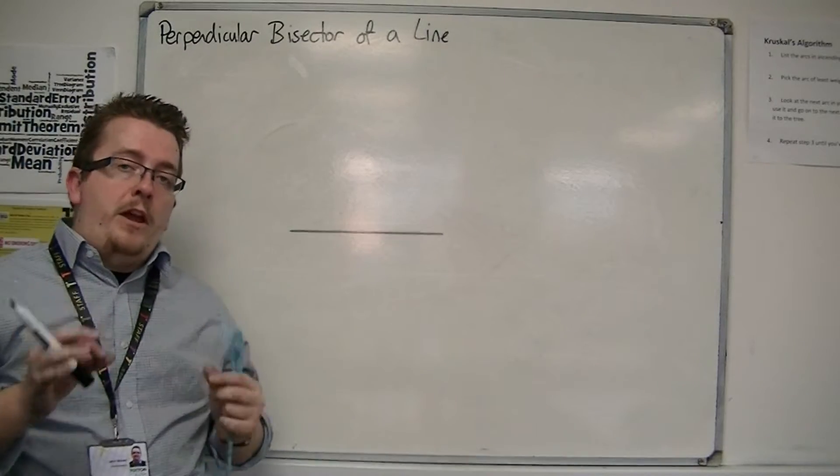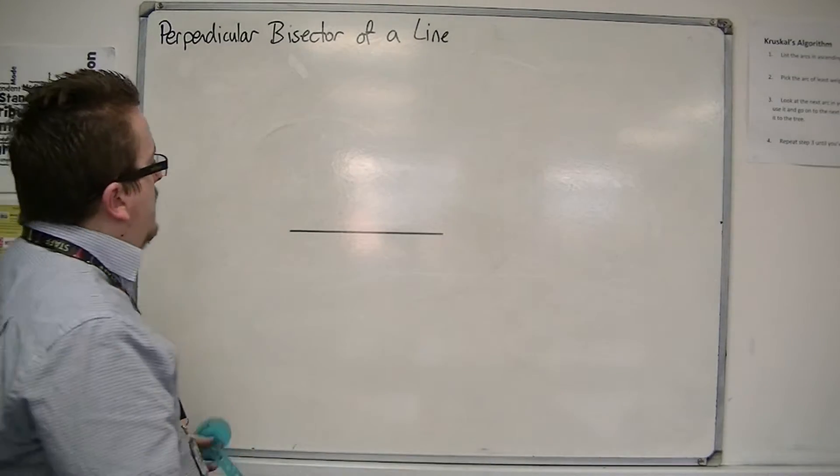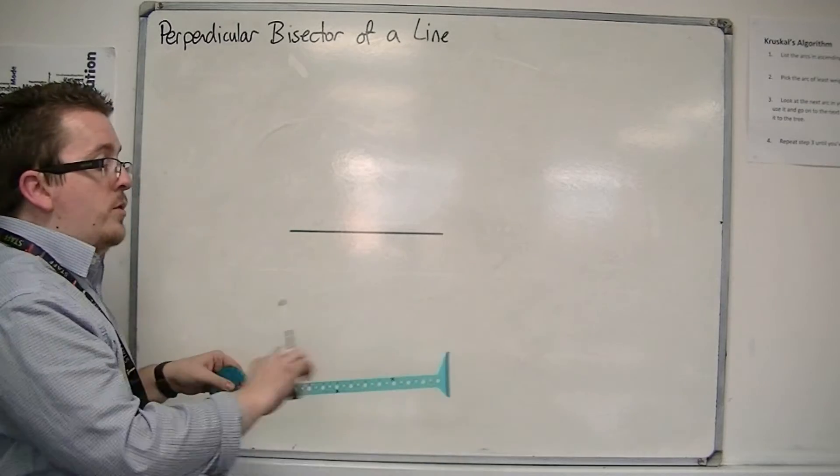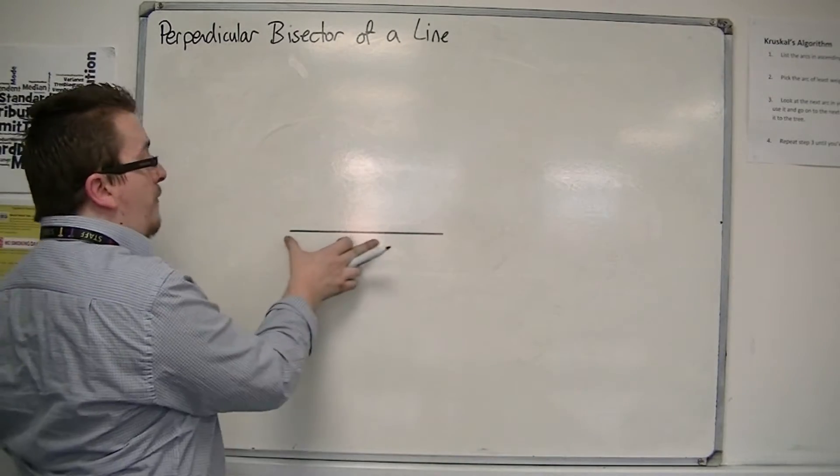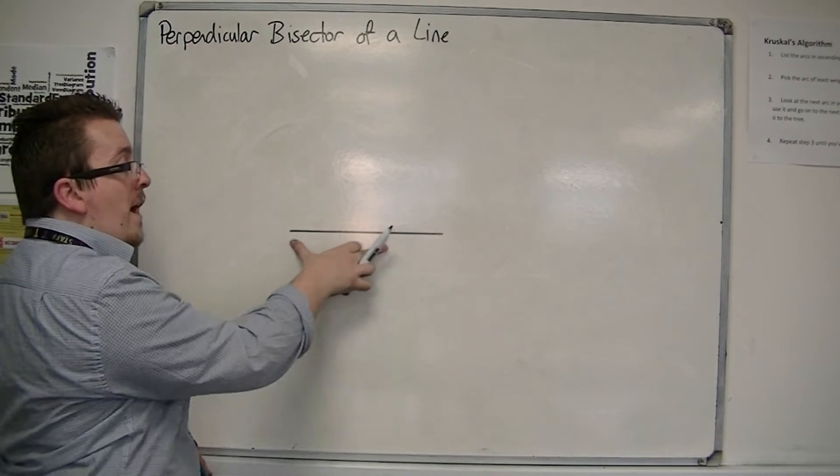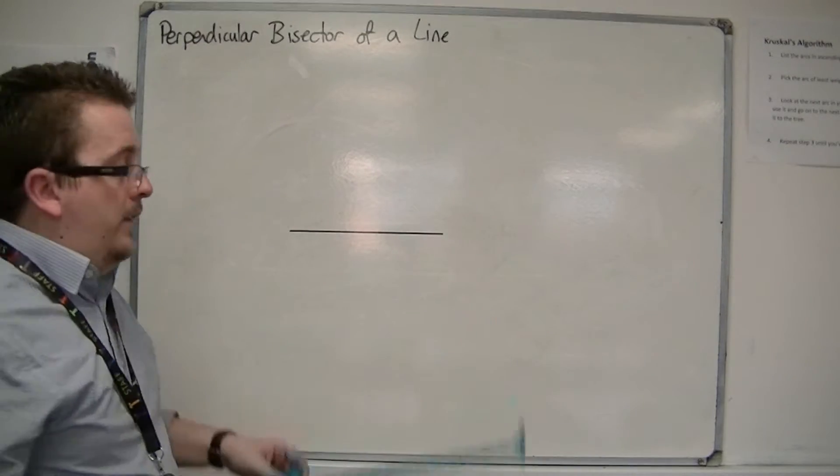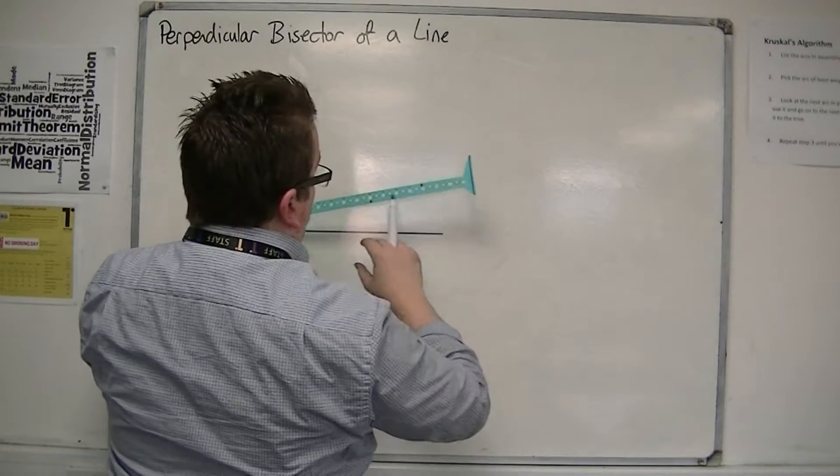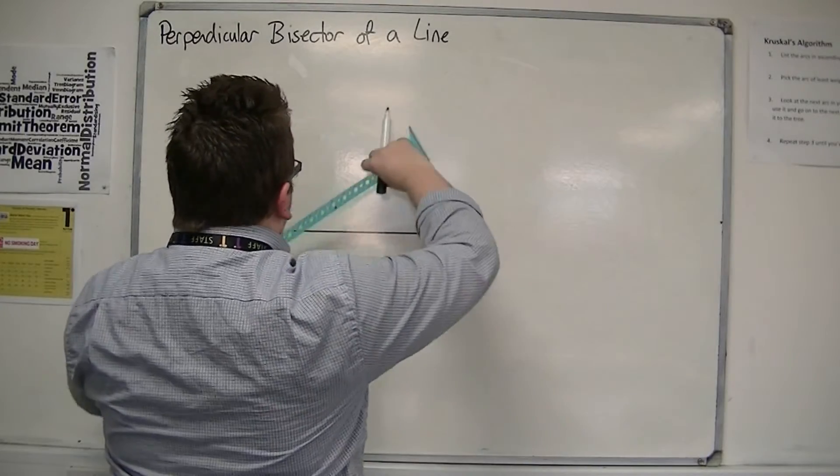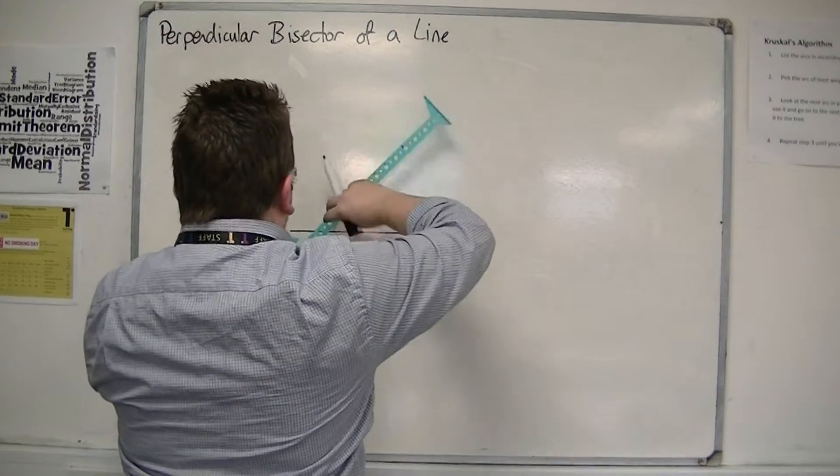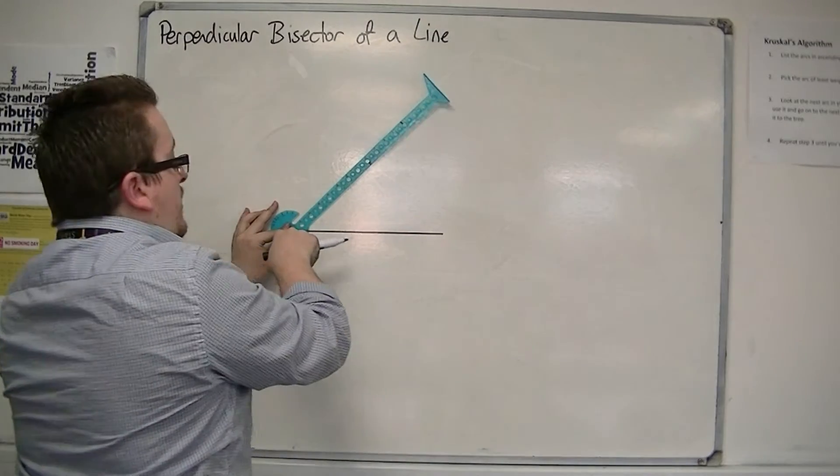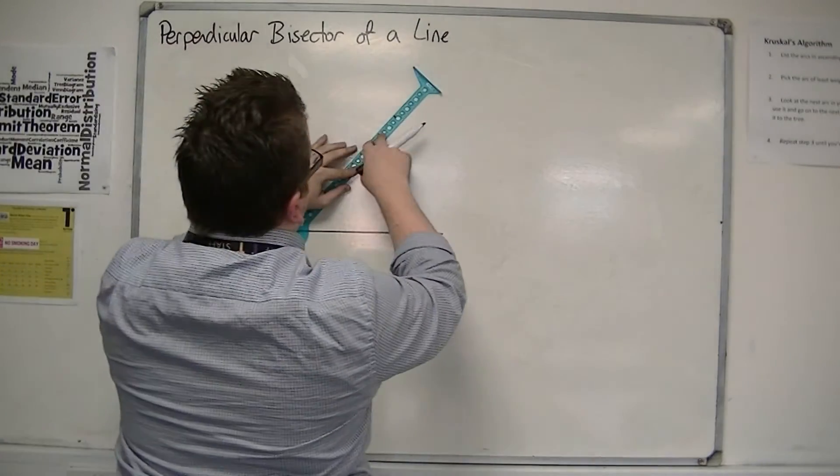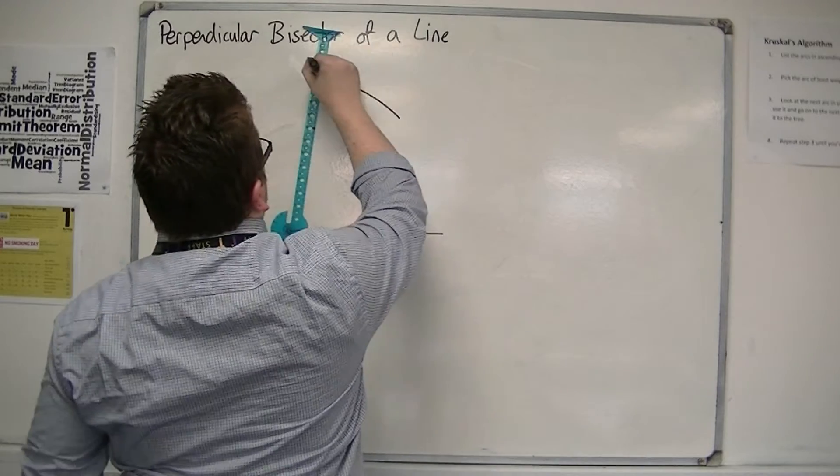Now the way to do it is with a pair of compasses. You extend your compasses, doesn't matter to which length, as long as it is longer than halfway of your line. Just make sure that you're always using the same length. You put your compass point on the corner and make an arc.